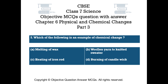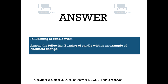Question number 5. Which of the following is an example of chemical change? Option A melting of wax, Option B woolen yarn to knitted sweater, Option C heating of iron rod, Option D burning of candle wick. The right answer is Option D — burning of candle wick. Among the following, burning of candle wick is an example of chemical change.